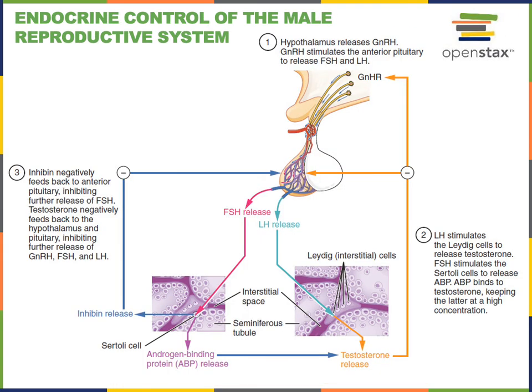In men, the HPG axis regulates the production of the steroid sex hormone testosterone and also regulates sperm production. The HPG axis starts with GnRH from the hypothalamus stimulating the production of FSH and LH from the anterior pituitary. LH binds to receptors on the surface of cells in the testes known as the Leydig cells, or interstitial cells of Leydig, and LH stimulates the Leydig cells to produce testosterone, which then travels through the blood binding to receptors within cells.